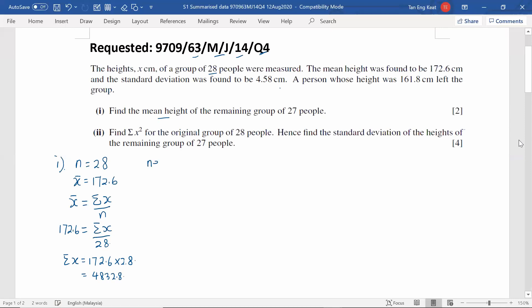Then we are able to find out the new sigma X. Sigma X is the sum of the heights of 28 people here. So since one person who left, the height was 161.8 cm, we take the total of 28 people's height, minus out the person who left. And that's where we get the new total height of 27 people.